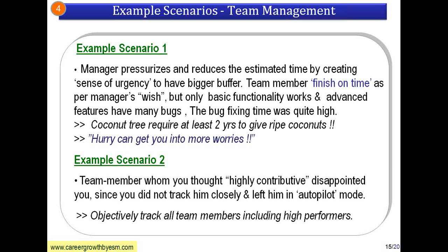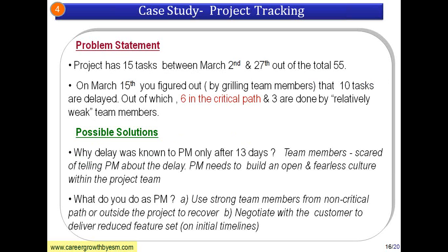Another scenario is when a team member you thought very highly of — a high contributor or hero — has actually disappointed you. Sometimes you think a person is great, so you give them the work and don't track them at all. But even high performers require some kind of tracking. If you leave a high performer in autopilot mode, some may deliver but some may require follow-up. You have to judge based on context or history — it is a good idea to objectively assess.